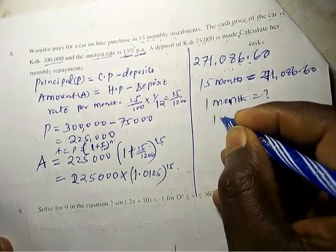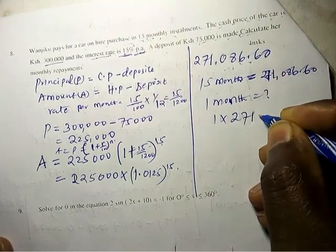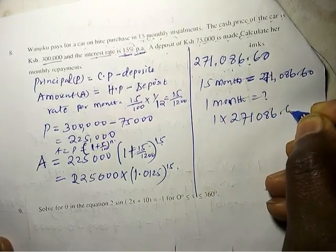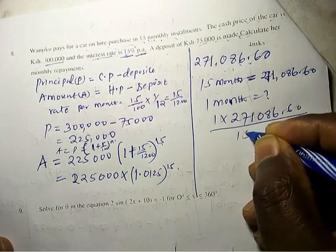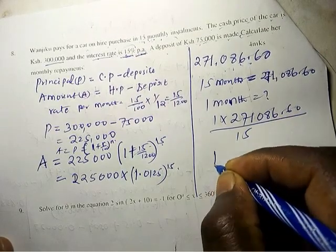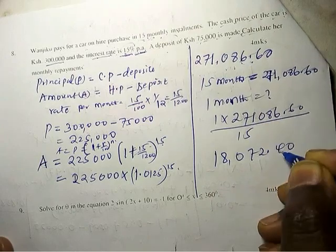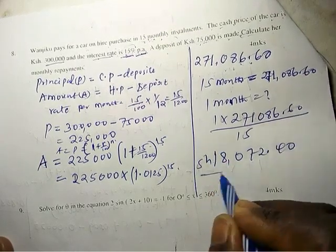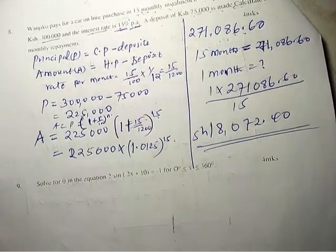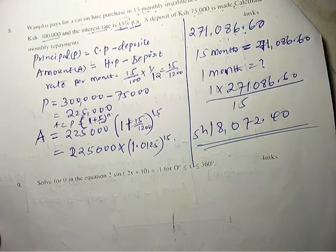One month per month is 18,072.40 shillings. That is the amount Wanchiko will pay per month.